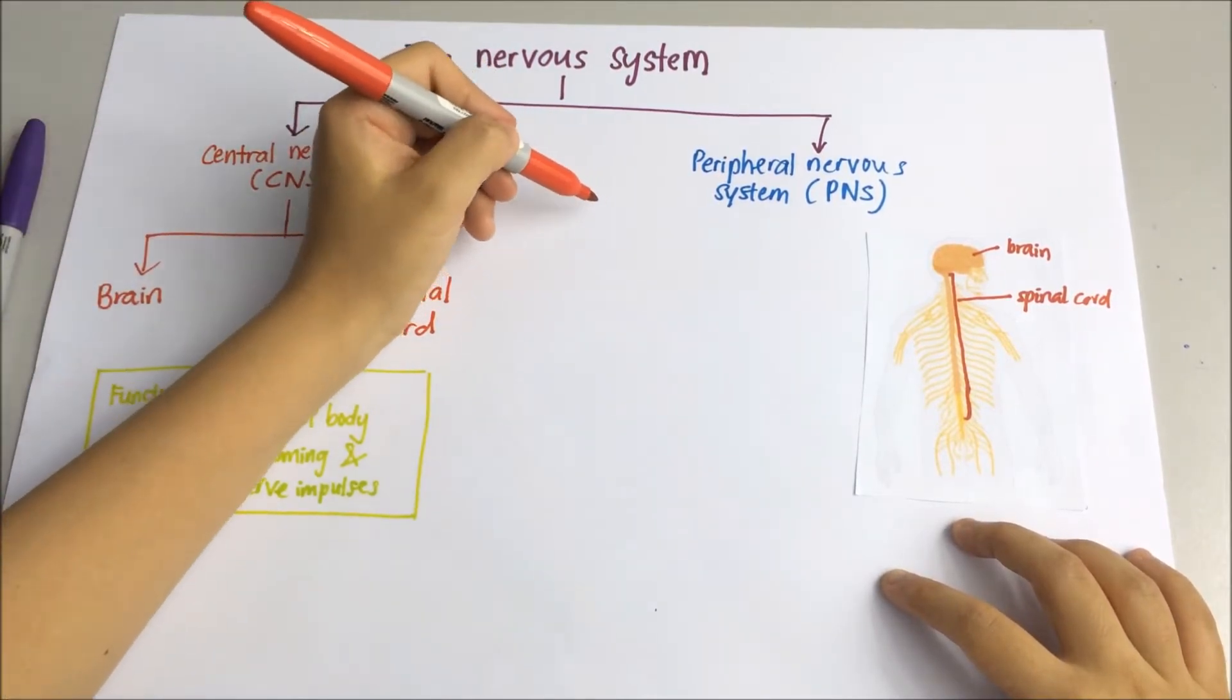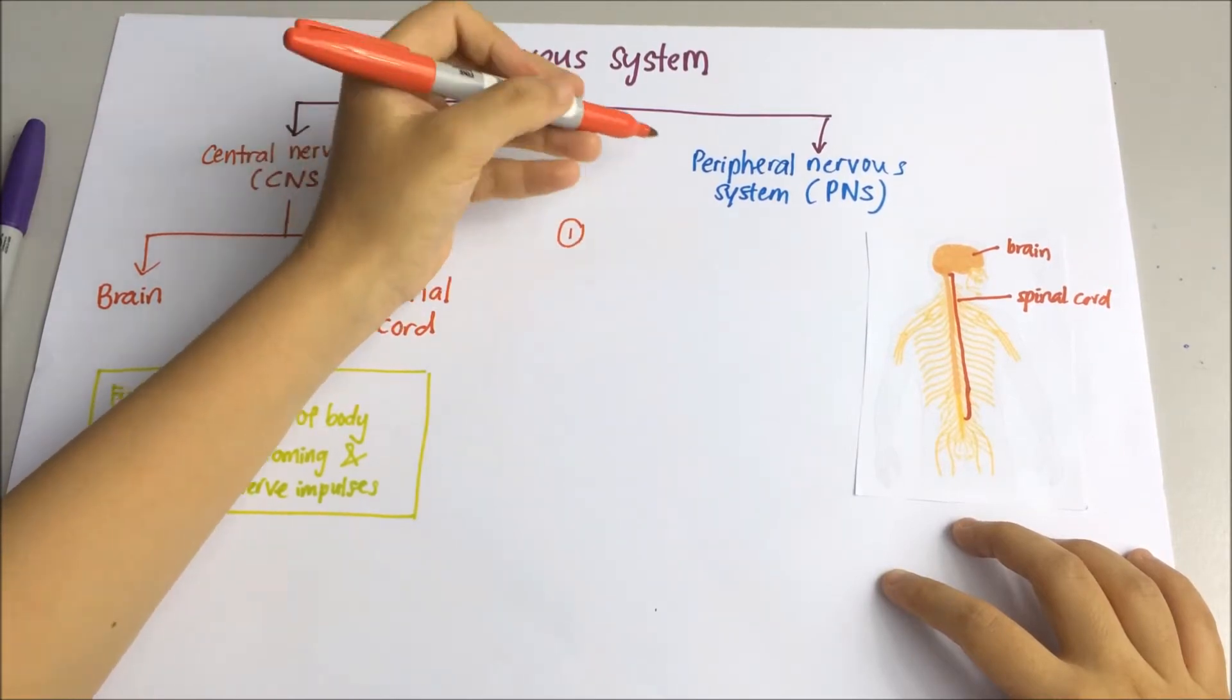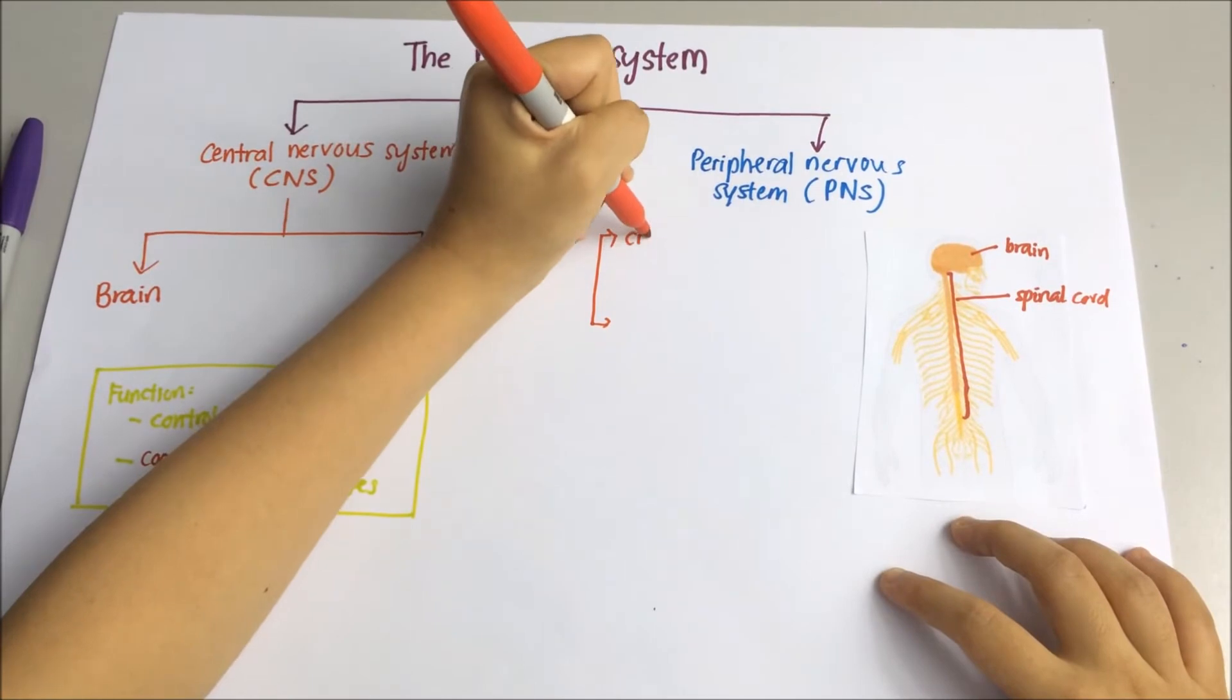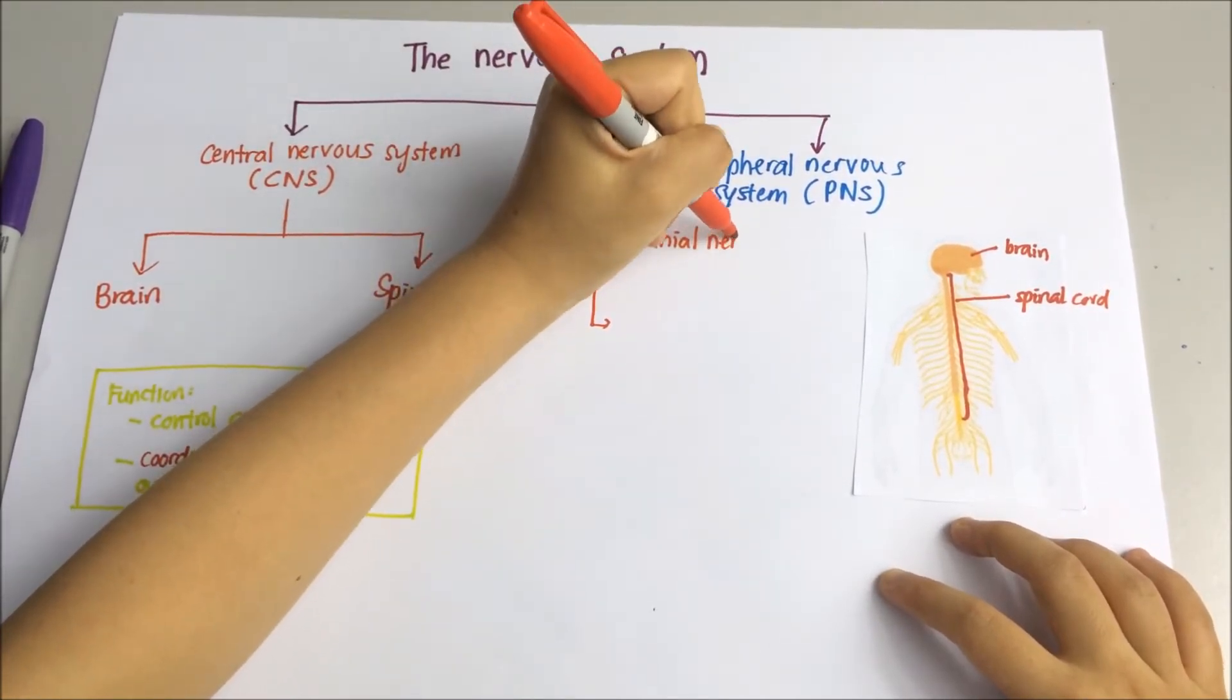Peripheral nervous system is all the nerves that branch out from the central nervous system. Under peripheral nervous system, it can be divided by a few ways.